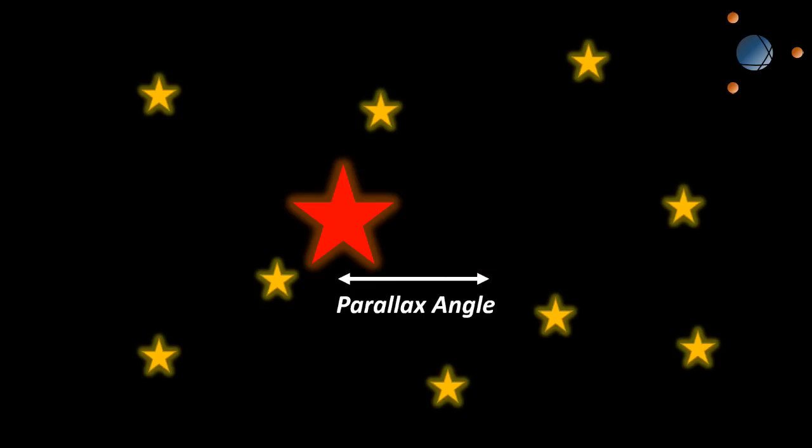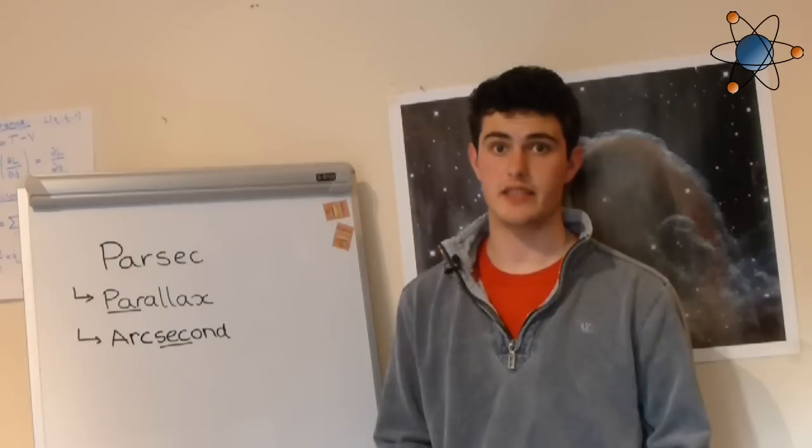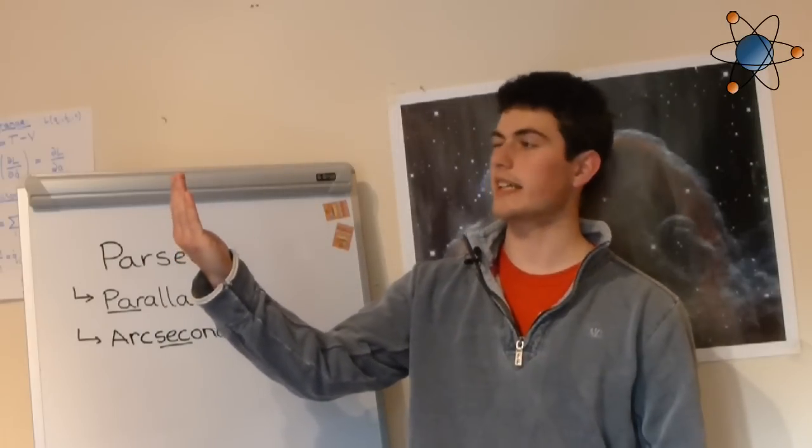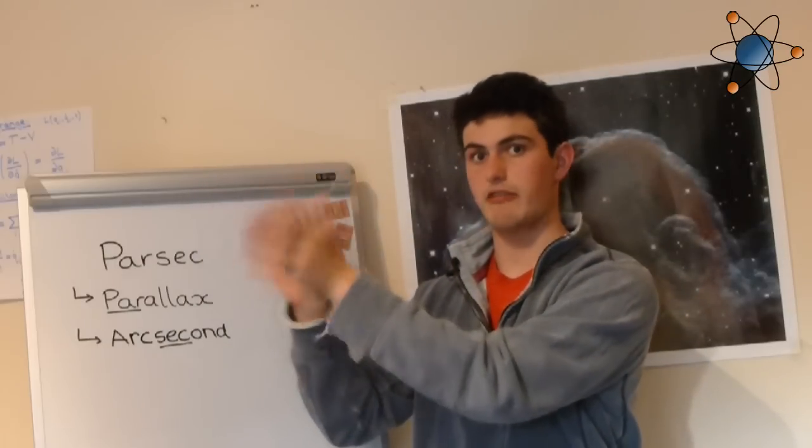Parallax is where the position of an object appears to change as you move. You can see this effect by holding your hand in front of your face and alternately closing each eye. You'll see that your hand appears to move relative to the background.